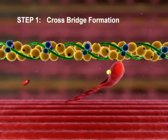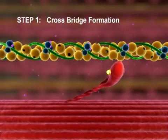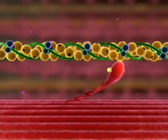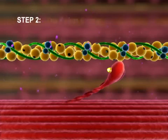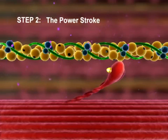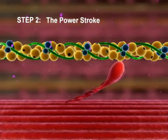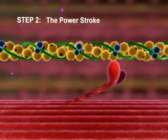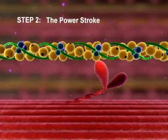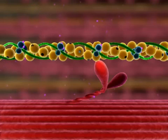Step 2: The power stroke. ADP is released and the activated myosin head pivots, sliding the thin myofilament toward the center of the sarcomere.